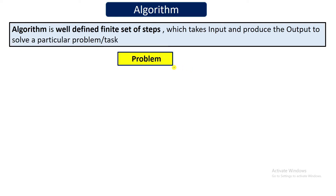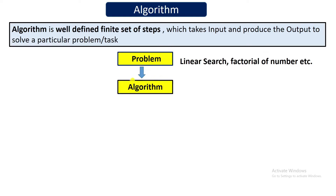For example, you are given a problem, and the problem can be anything like linear search or finding the factorial of a number. Linear search is basically finding or searching a number out of a large collection of numbers, and factorial I hope you know. So you are given this problem and somebody asks you to solve it or give the logic — that logic will be called the algorithm. So the logic or the approach to solve that problem is basically an algorithm, and the algorithm will contain many steps to solve that particular problem.